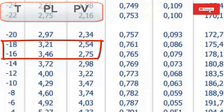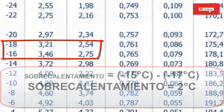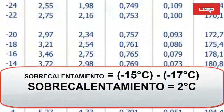Subtract the temperature measured with the thermometer — in this case minus 15°C — from the value in the table, which is minus 17°C. This difference will be the superheat of the coolant. In this case the result is 2 degrees Celsius.